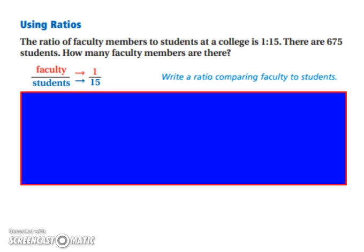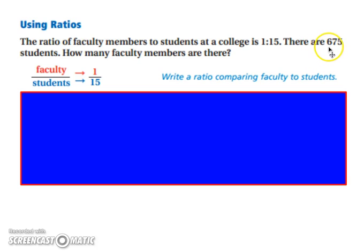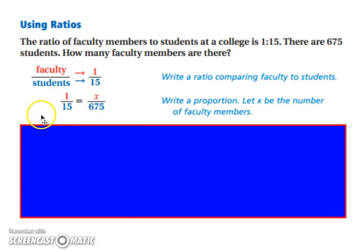Let's look at using some ratios. The ratio of faculty members to students at a college is 1 to 15. There are 675 students. How many faculty members are there? Well, if there is one faculty member for every 15 students, you can write it as a fraction. So, one faculty for every 15 students — we want to know how many faculty there are if there are 675 students. Set up a proportion: 1 over 15, with faculty on top and students on the bottom.